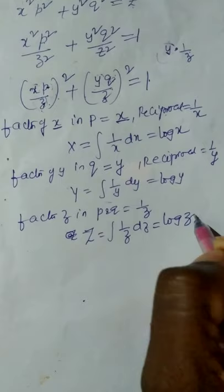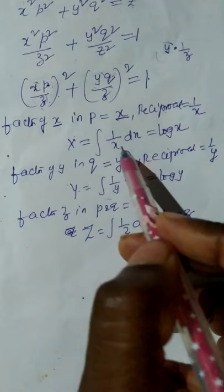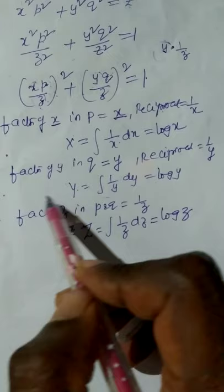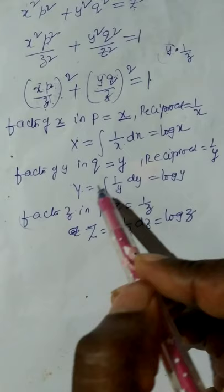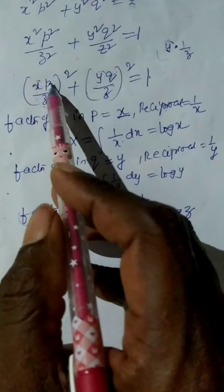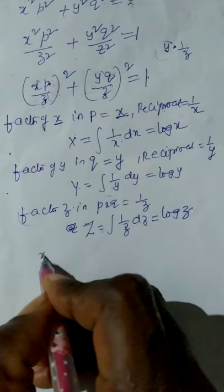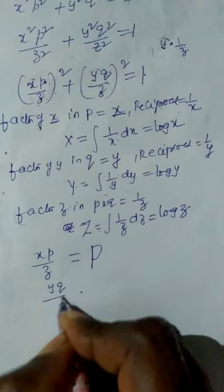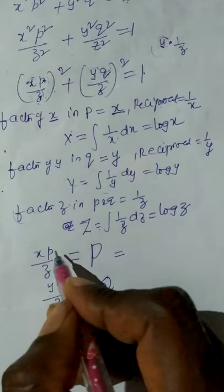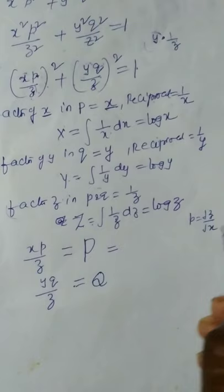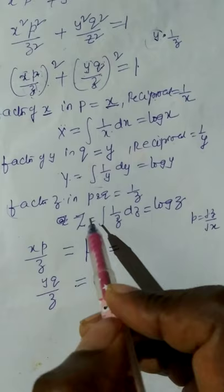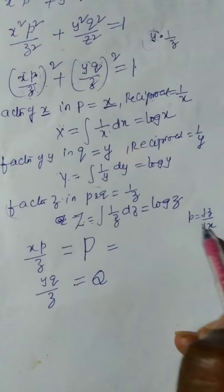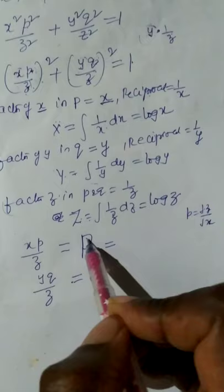In case of capital X and capital Y, we consider the reciprocal of the factors as integrands. In case of capital Z, we consider only the factor of z as the integrand. By these three considerations, x and z are merged into small p and converted into capital P, giving xp/z = capital P. Similarly, yq/z = capital Q. Since P = ∂Z/∂X and Q = ∂Z/∂Y.